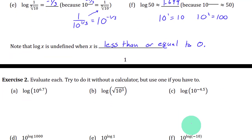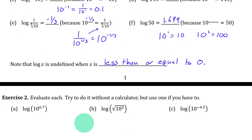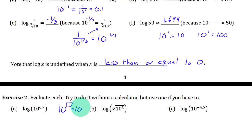For exercise 2, let's evaluate each of these. For these ones, I'm not giving you the extra hint step. But when you see a logarithm, you should be thinking: 10 to what power results in 10 to the 6.7? And whatever that power is, that is the result of this logarithm. In this case, that is 6.7.